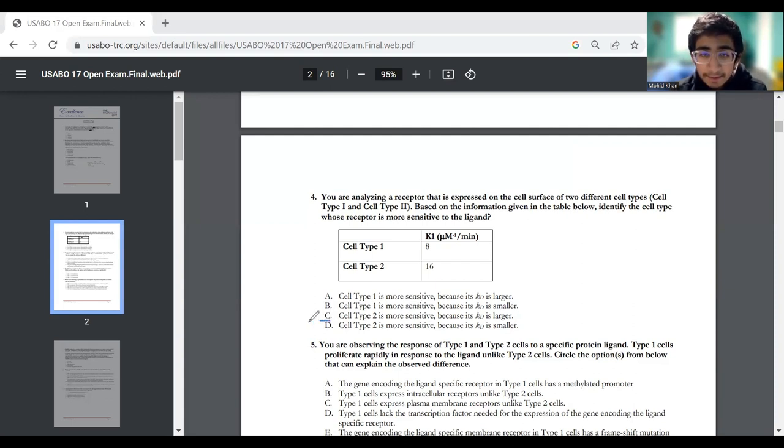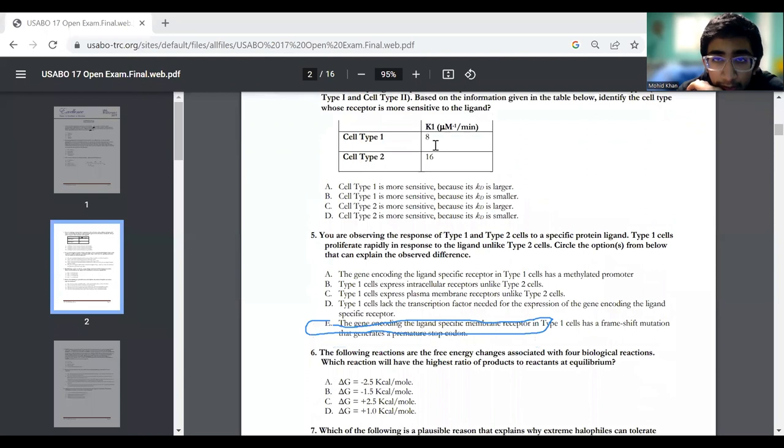I think the answer would be D, cell type two is more sensitive because we have a higher K1 and that would lead to a smaller KD. KD is the dissociation constant. If the KD is smaller, it dissociates less, so it would be more sensitive. That's why I think the answer would be D. But if someone has a better explanation, I'm not really sure of this answer, but I think it is D.